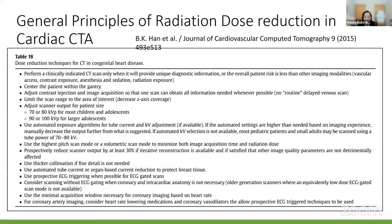In terms of general principles, I'll refer you to Table 18 in the SCCT 2015 guidelines on ACHD — a very comprehensive document. These guidelines outline ways to reduce radiation dose exposure. Not all cases require gated images; if you're just looking at pulmonary veins, sometimes a flash acquisition single-beat study suffices. Other times you need gated images for detail. Being mindful of radiation exposure and keeping it as low as reasonably achievable is the guiding principle for these patients.